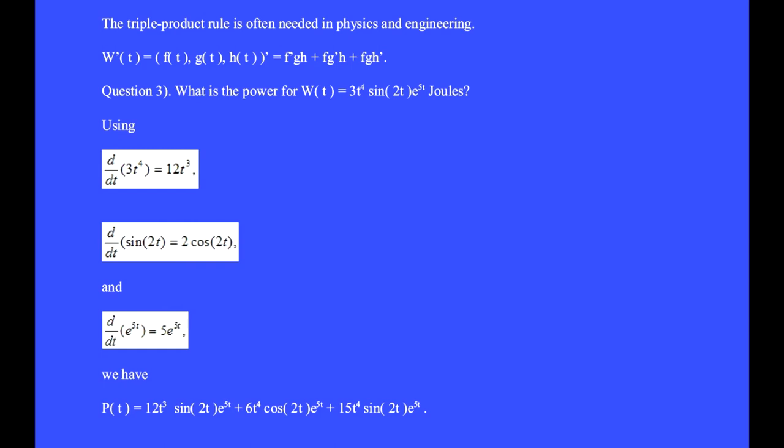Question 3: What is the power if work as a function of time is W(t) = 3t⁴ sin(2t) e^(5t) joules?